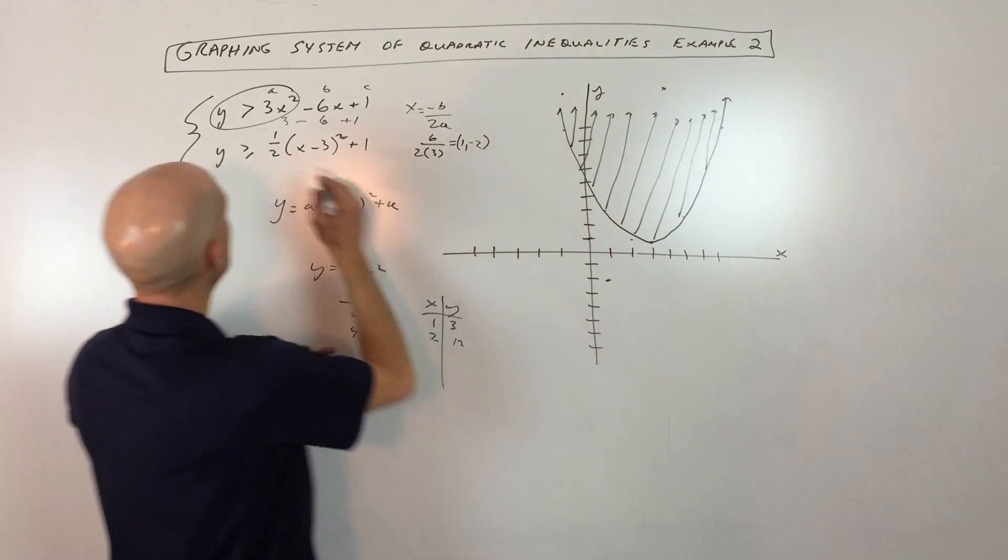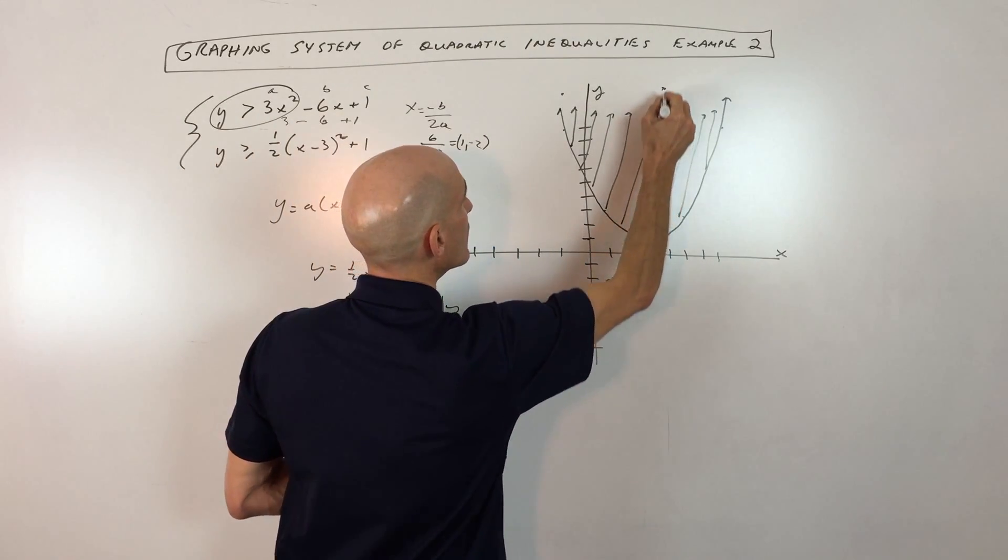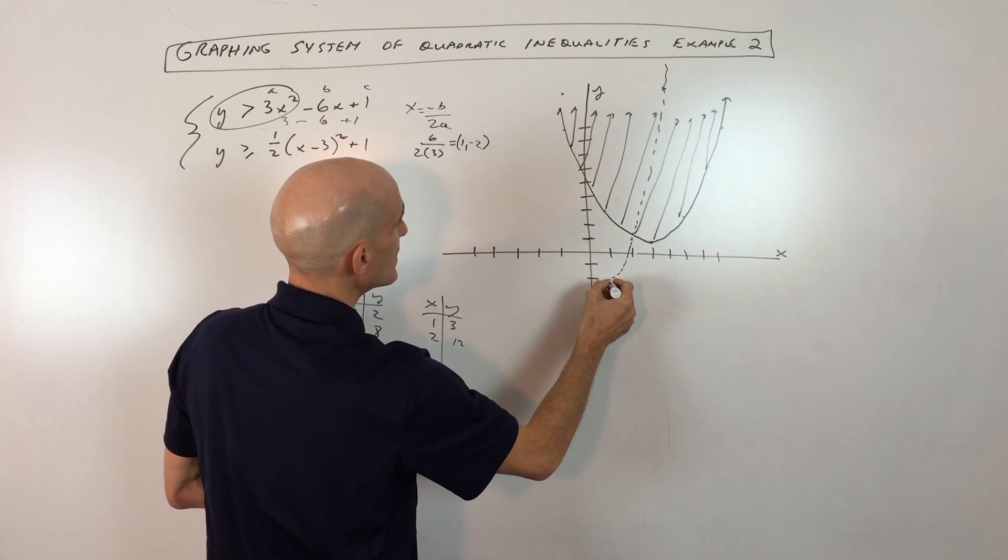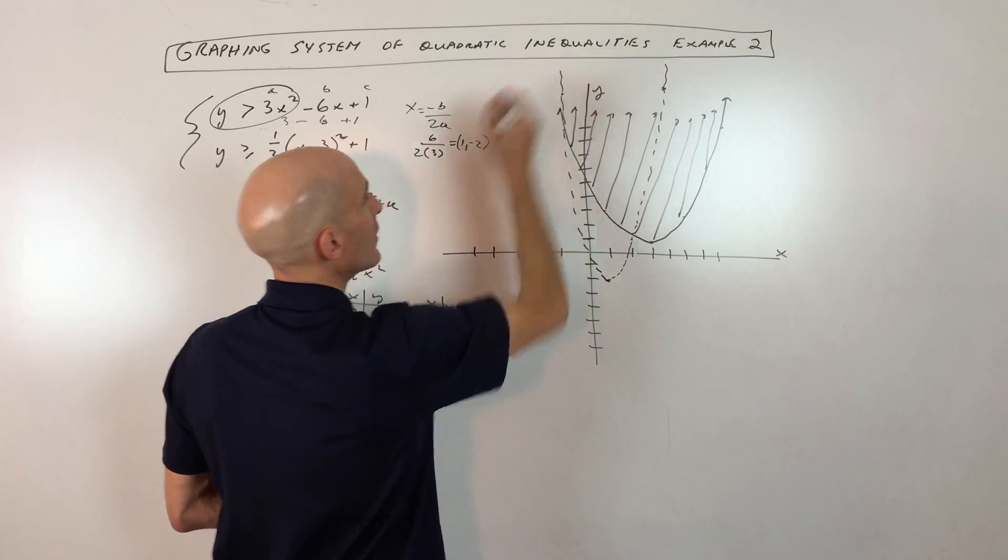So basically, this one is greater than but not equal to. So what we have here is we have a dashed line. So it's going to look something like this.